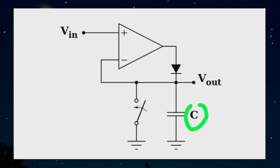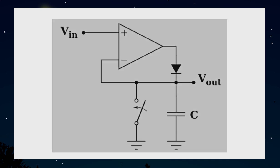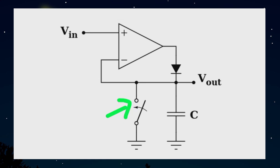This output voltage is essentially tracking the peak value of the input, and the circuit is called a peak detector. This is how a simple op-amp can be configured as a peak detector circuit. And this switch here is just to reset the capacitor voltage.